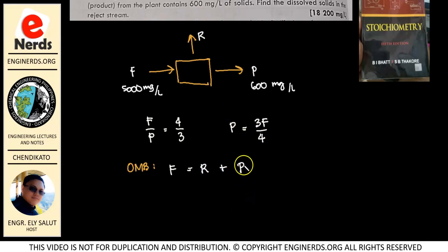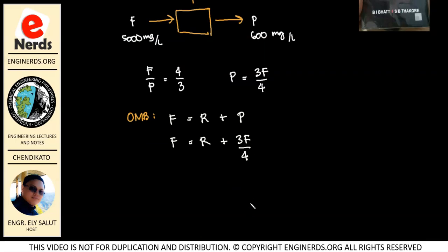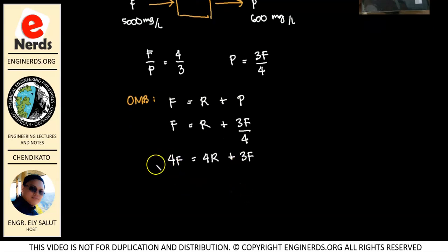But we can present our P as a function of F, no? So we can substitute that here. So our F is equal to R plus our P which is 3F over 4. So multiplying both sides of our equation by 4, we have 4F is equal to 4R plus 3F. Okay, so we both have F on the left and right side of our equation. So we can subtract that. 4F minus 3F will be 1F. So I have F is equal to 4R.